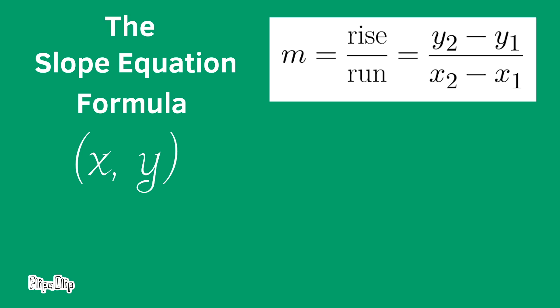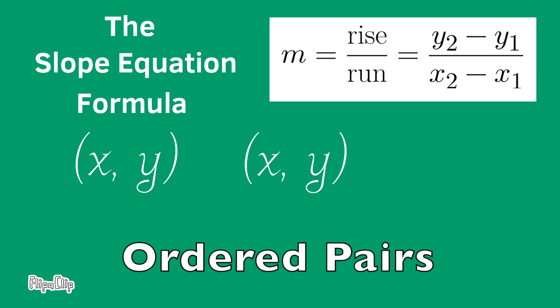To use the slope equation formula to find the slope of a line, you need two sets of coordinates. Each set of coordinates would contain an x coordinate and a y coordinate. They call these two sets of coordinates ordered pairs.